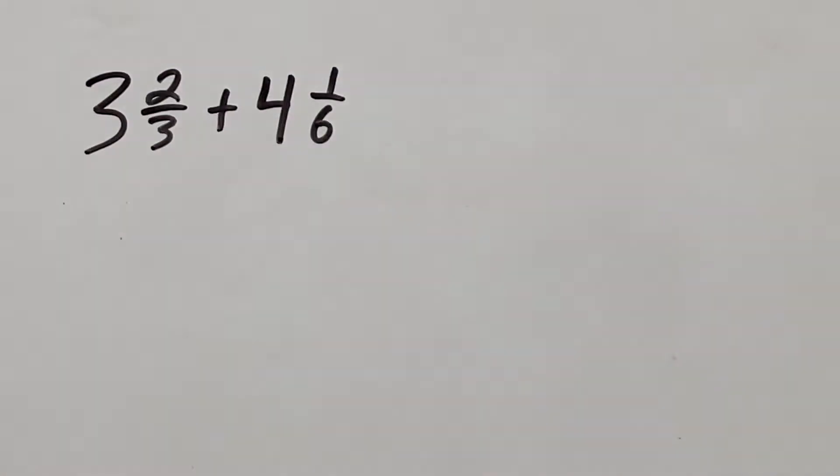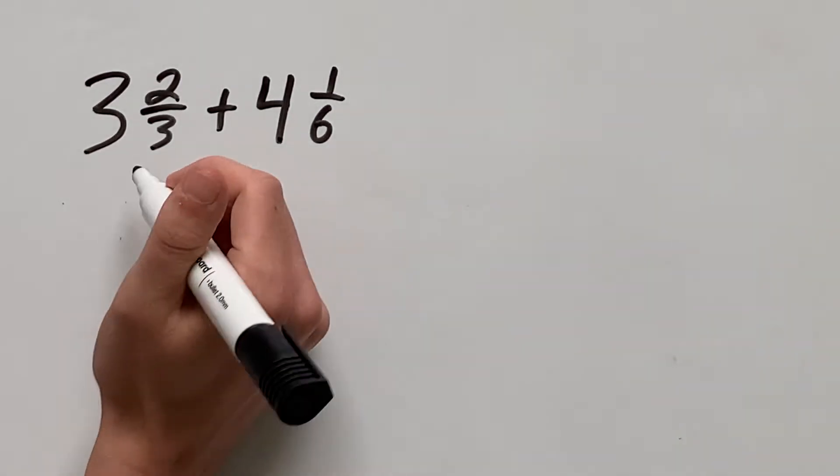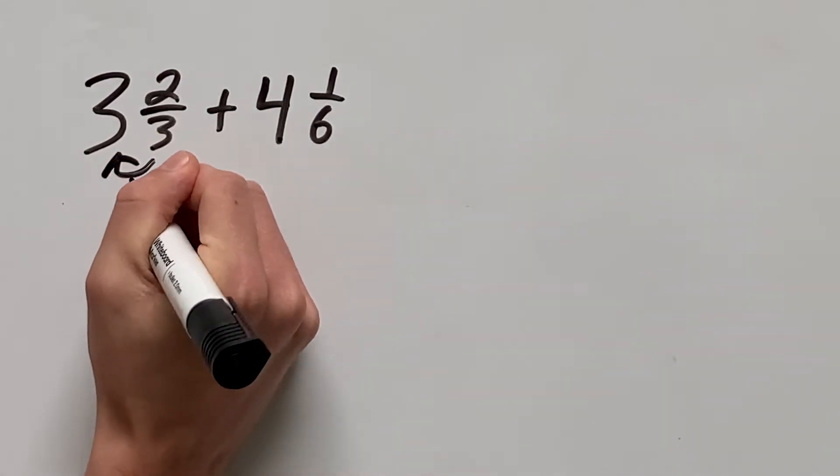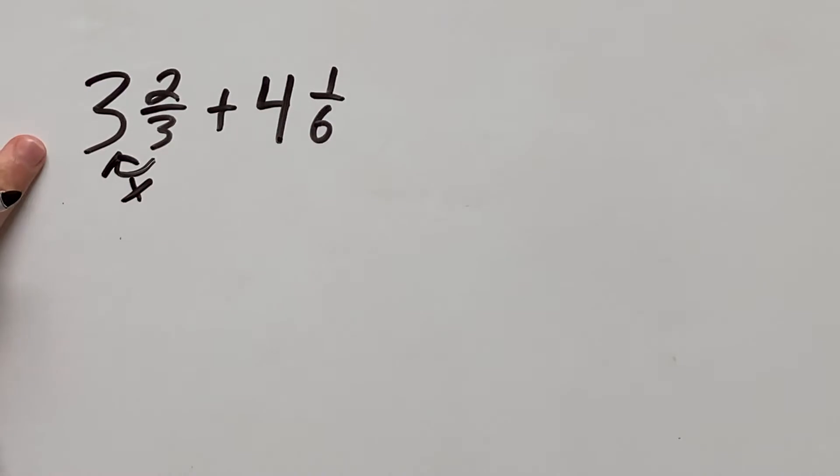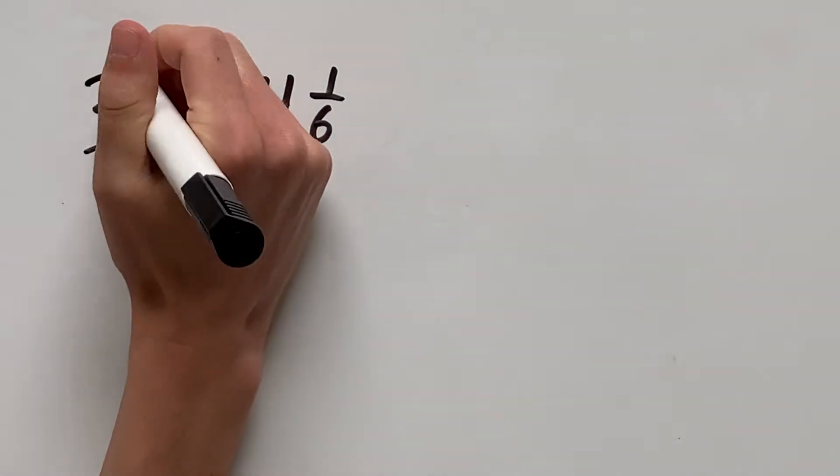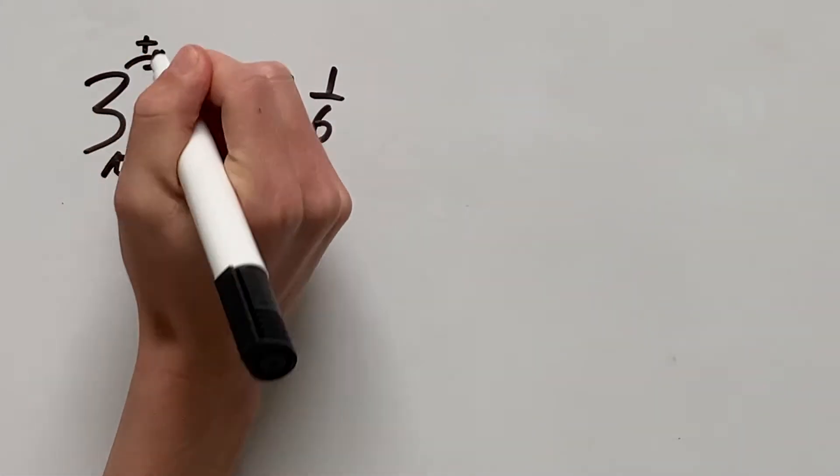The first thing you want to do is convert these into improper fractions as that will make them easier to add and then at the end we can convert it back. To convert these to improper fractions, we want to multiply the denominator by the whole number out front and then add that to the numerator.